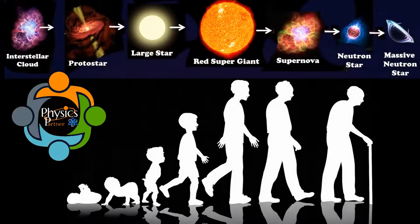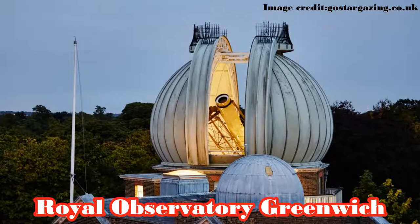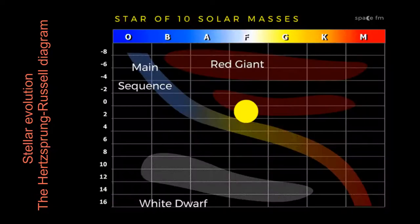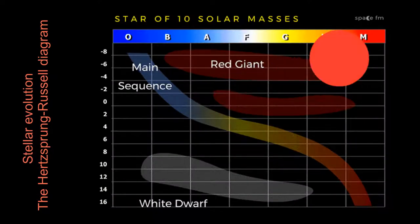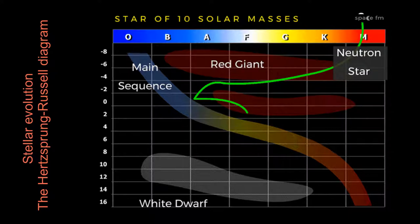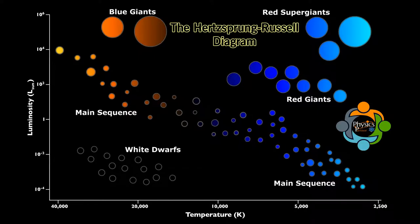All stars have a finite lifetime. Royal Observatory Greenwich astronomers explain how stars can be categorized and their evolution studied by tracking their movement across a very important graph in stellar evolution: the Hertzsprung-Russell diagram. Let's look at the history of the HR diagram.